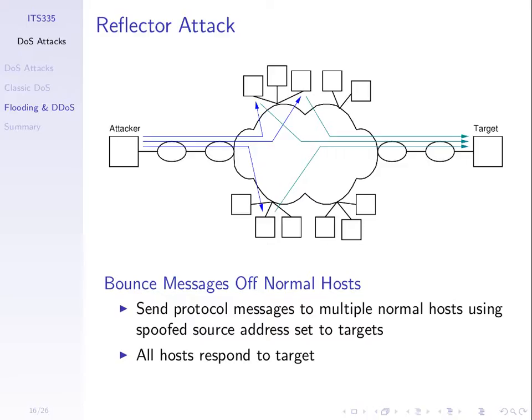Let's look at the applications that can do this before a more detailed example. For this reflector attack to work, we need these normal computers to be able to respond to the message they receive. These normal computers are not infected in any way — no virus or malicious software — so they're not under control of the attacker. We need a protocol such that if we send a message to these normal computers, they will respond.